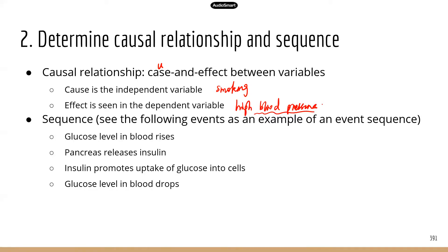Sequence: you're going to choose the correct order for a series of events or steps. In this example, you have four different events and you need to know the correct sequence. This is about insulin and glucose levels — we know that insulin regulates glucose level in the blood. The trigger for insulin release is a high glucose level in the blood, and that will be number one in this series of events.